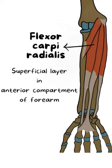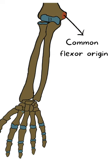This muscle lies in the superficial layer in the anterior compartment of the forearm. It originates from the common flexor origin along with other muscles like pronator teres, flexor carpi ulnaris, and palmaris longus.